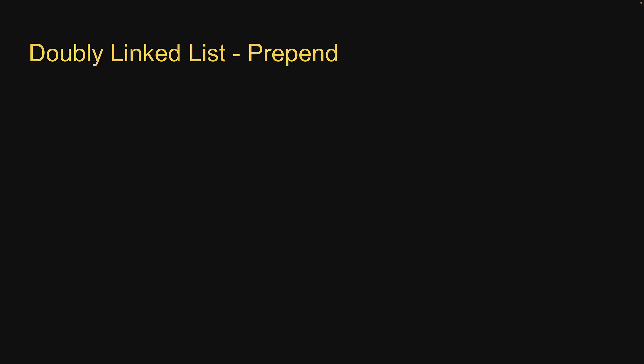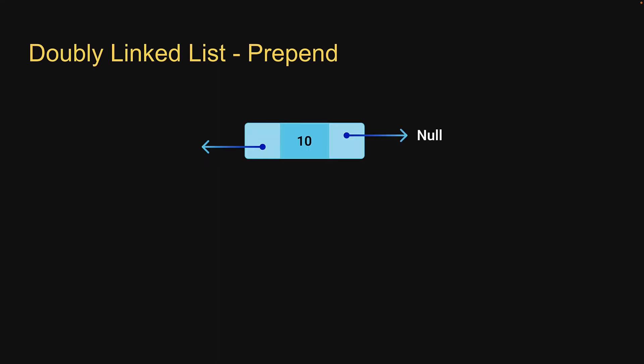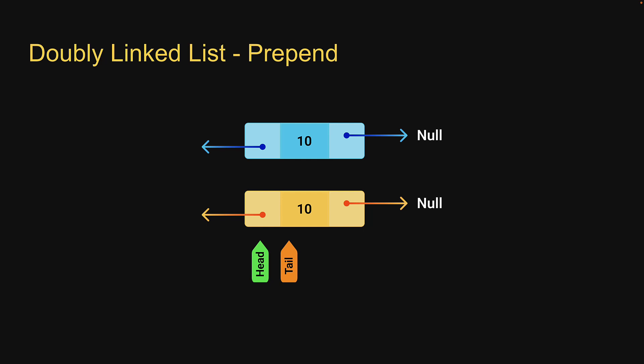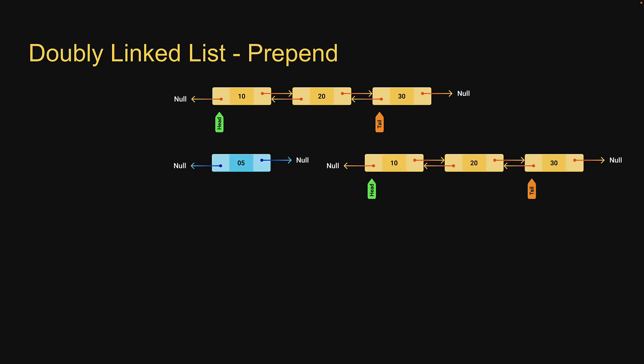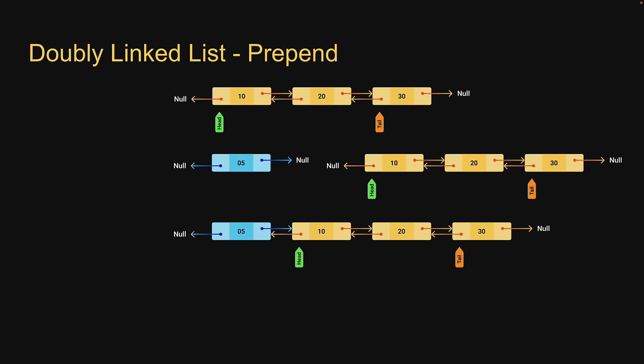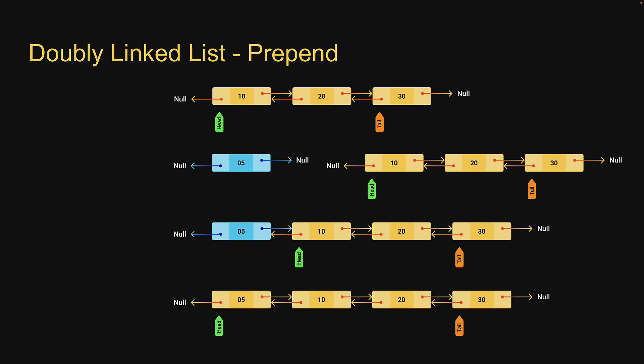First up, prepend — to add a new node at the start of the list. If the list is empty, the new node is both the head and tail of the list. However, if a list already exists, we point node.next to head, head.previous to node, and assign head to the new node, which is the first node in the updated list. This is very similar to what we have already seen, with the new addition of handling the previous pointer.